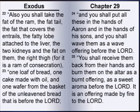Also you shall take the fat of the ram, the fat tail, the fat that covers the entrails, the fatty lobe attached to the liver, the two kidneys, and the fat on them, the right thigh, for it is a ram of consecration. One loaf of bread, one cake made with oil, and one wafer from the basket of the unleavened bread that is before the Lord. And you shall put all these in the hands of Aaron and in the hands of his sons, and you shall wave them as a wave offering before the Lord.